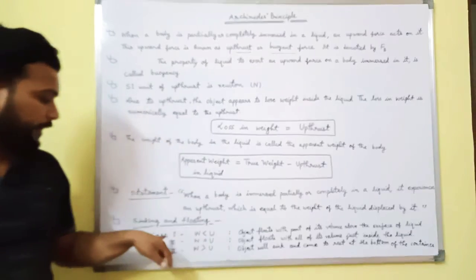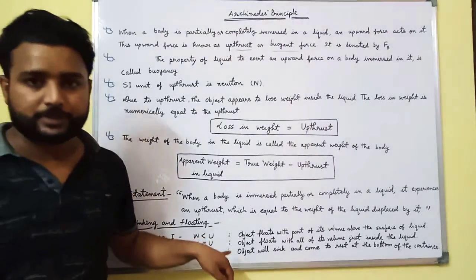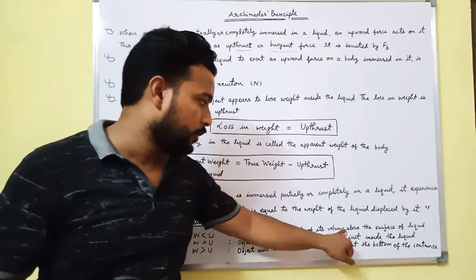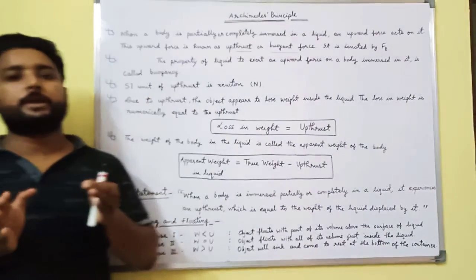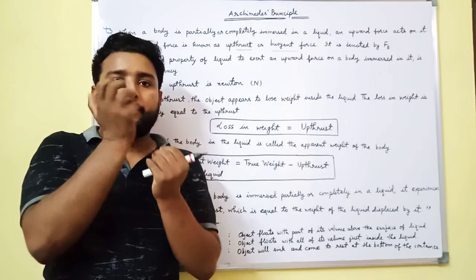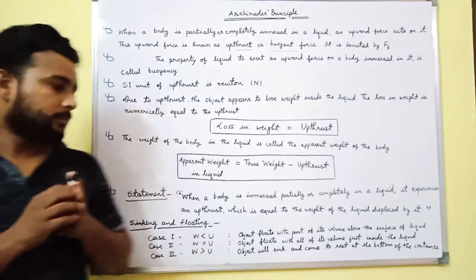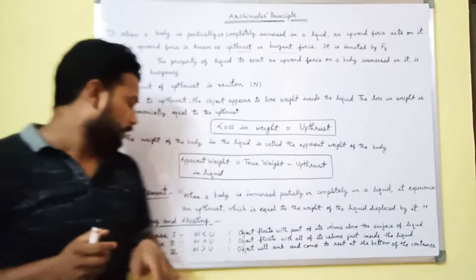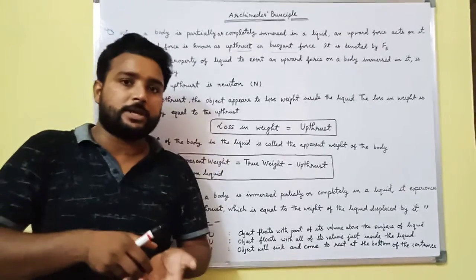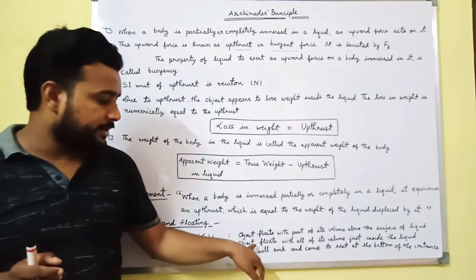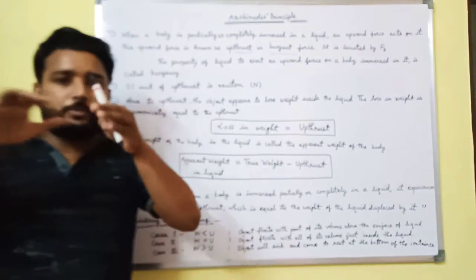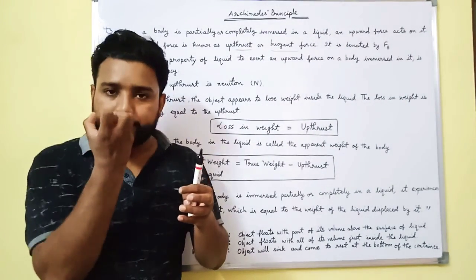If the weight of the body is less than the thrust, the object floats with part of its volume above the surface of the liquid. When weight equals the thrust, the object floats with all of its volume just inside the liquid, with its upper surface level with the surface of the liquid.